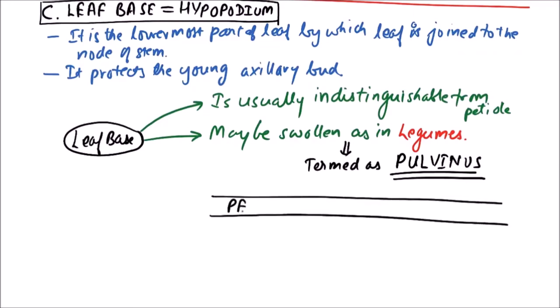If petiole and pulvinus are compared, we can say that petiole is cylindrical while pulvinus is swollen.